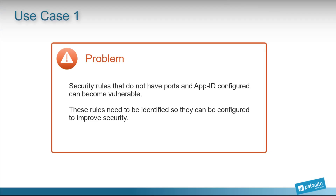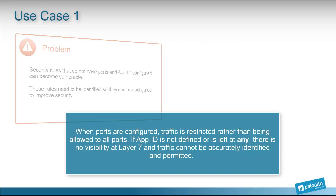Security rules that do not have ports in AppID configured can become vulnerable because they can pass in 65,000 ports in any application. These rules need to be identified so they can be configured to improve security. When ports are configured, traffic is restricted rather than allowing all 65,000 ports.